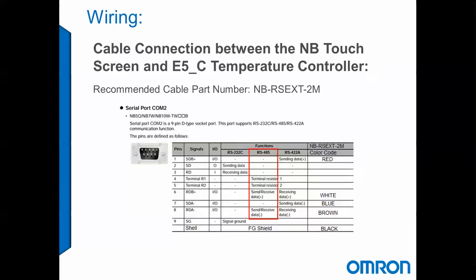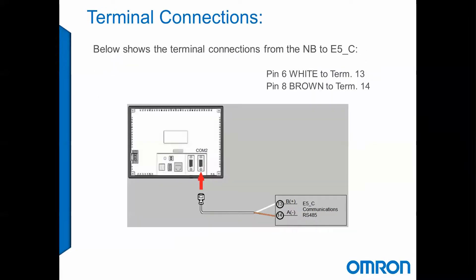We also have the ability to insert a terminal resistor by shorting terminals number 4 and 5, which will bring in an internal terminal resistor in the NB Touchscreen itself. Below shows the connection of the NB to E5EC Temperature Controller.